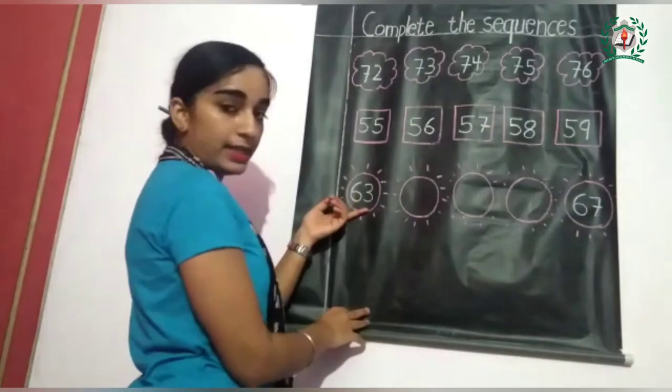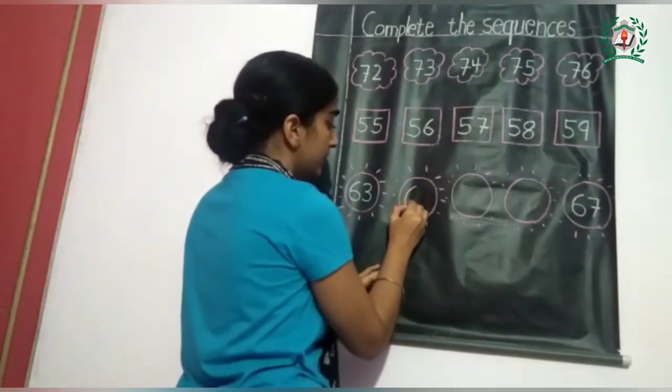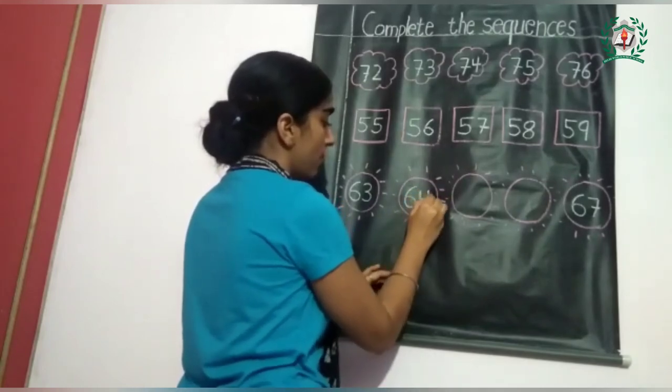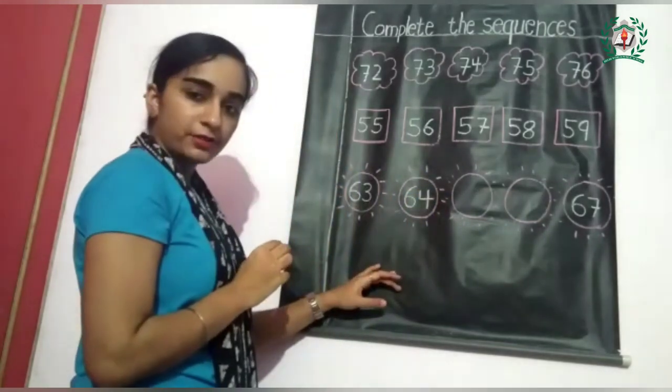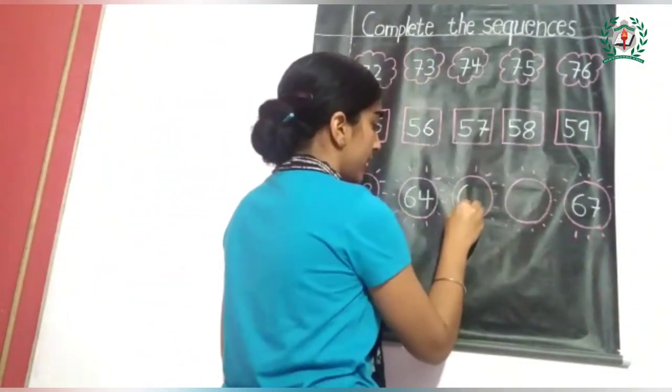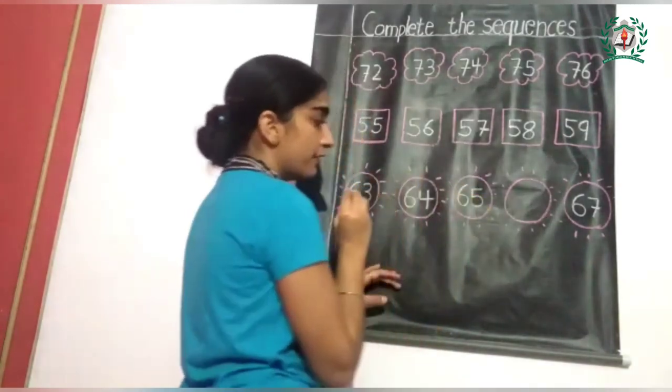Next is 63. What comes after 63? It's 64. What comes after 64? It's 65.